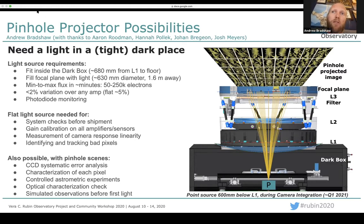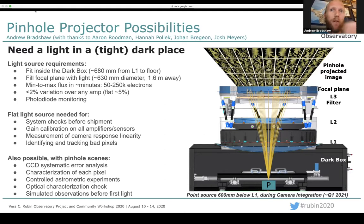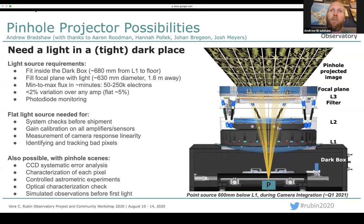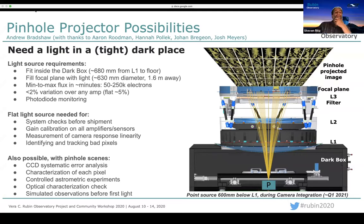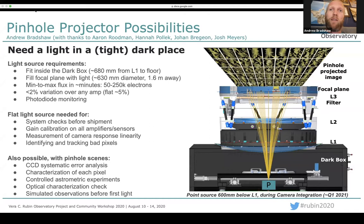We are proposing to take similar images during the final phase of camera integration next year. This image projector would live inside the dark box, alongside the narrow beam projector — the pencil beam — which will characterize the optical properties of the camera including lenses. The dark box will have a little more than half a meter of clearance between the floor and the first lens, so not much space to work in. From this narrow space, we would like to fill the focal plane uniformly with light with as little optical aberrations as possible. This lends itself to the pinhole design, which has no additional optics besides a hole in a box.